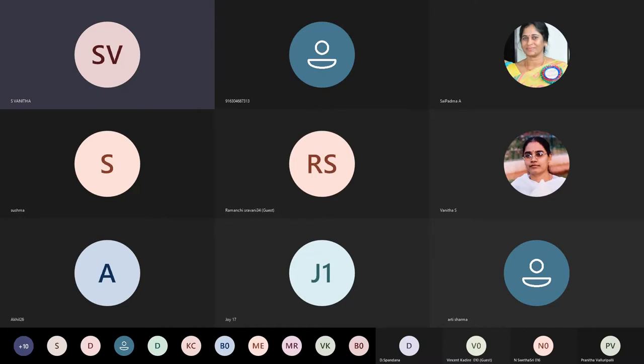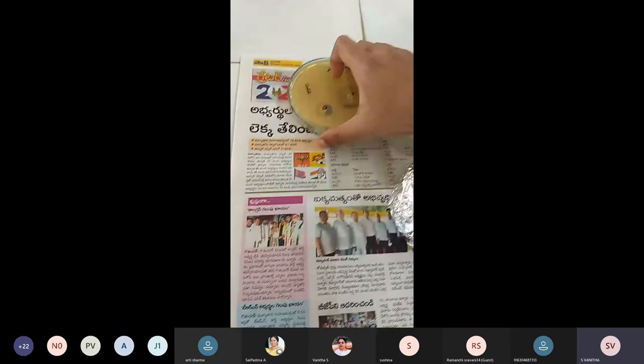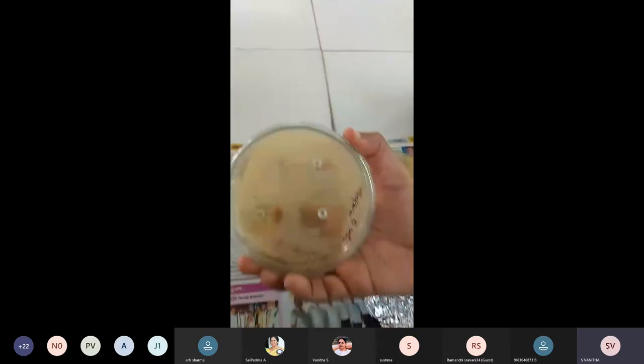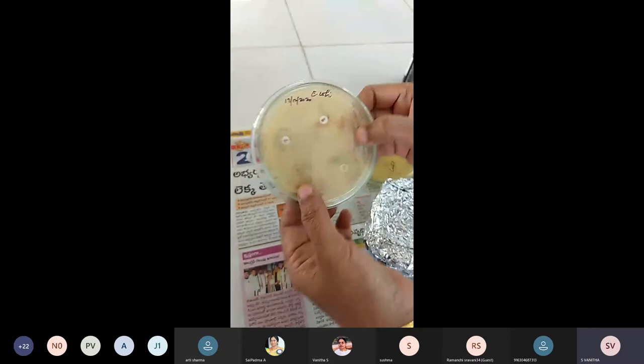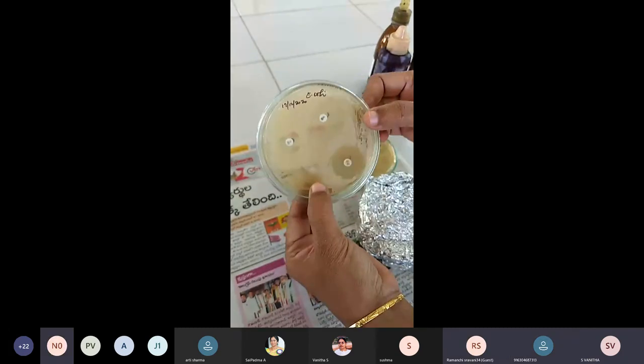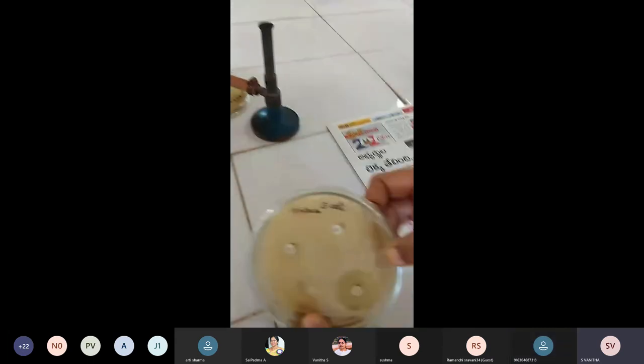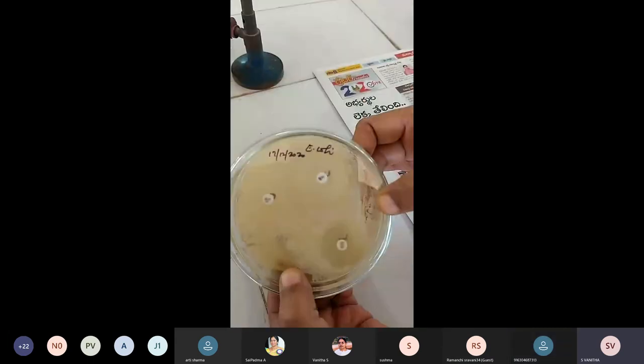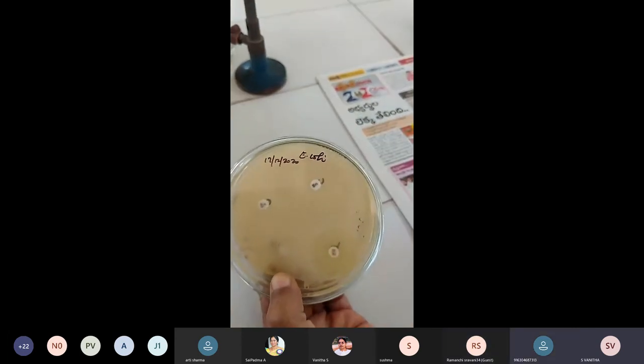Students, we will show you the results of the previous experiment. Can you tell me what this is? Are you able to see what it is? Antibiotic sensitivity. Yes, now it's clear. Okay, what is the label written?